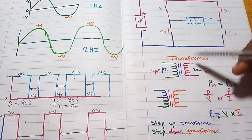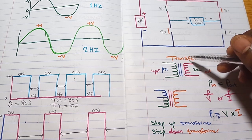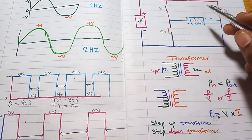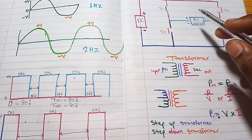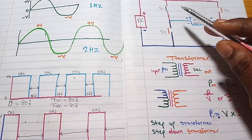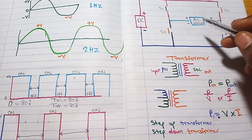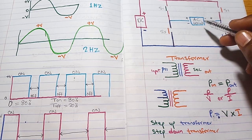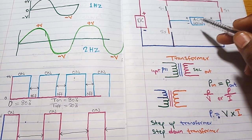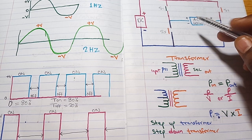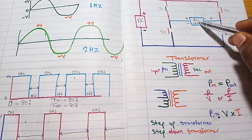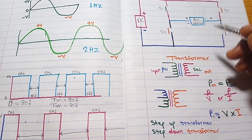To overcome this problem, we will introduce what we call a transformer. With the help of this transformer, it will boost the 12 volts that we converted to AC into a higher voltage of AC that can power our AC load. So we are going to replace the AC load with the transformer.